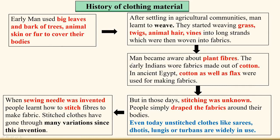Before completing this chapter, let's take a quick look at the history of clothing. Early man used big leaves, bark of trees, and animal skin or fur to cover their bodies. After settling in agricultural communities, man started to weave grass, twigs, animal hair, and vines into long strands, which were then woven into fabrics. Then man became aware of plant fibers.